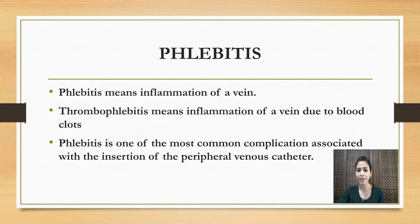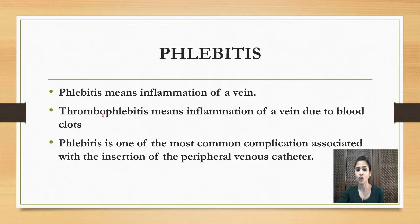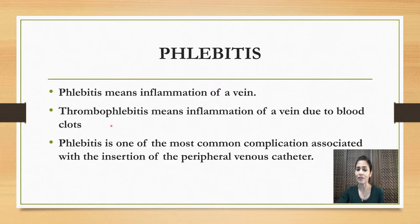So what do you mean by phlebitis? As you all know, 'itis' means inflammation. Phlebitis means inflammation of a vein. And thrombophlebitis — again, 'itis' means inflammation, 'phlebitis' means inflammation of a vein, and 'thrombus' means blood clots. So thrombophlebitis means inflammation of a vein due to blood clots. Phlebitis is one of the most common complications associated with the insertion of a peripheral venous catheter, that is, an IV cannula.